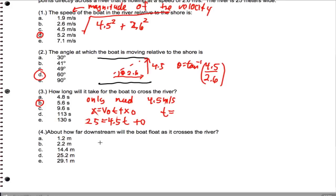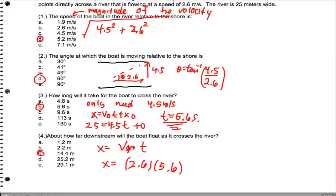We want to know how far downstream the boat will float as it crosses the river. We're going to use this time in this right here. So x equals v river speed times time. We're going to plug in x equals 2.6 times 5.6, and we end up getting 14.4 meters. So that's problems 1, 2, 3, and 4.